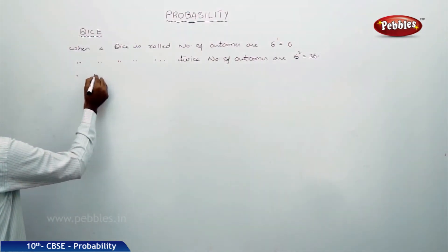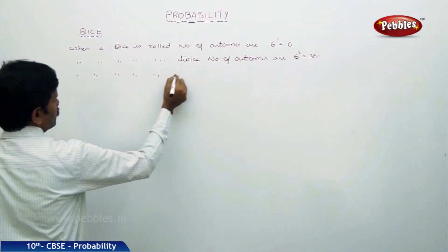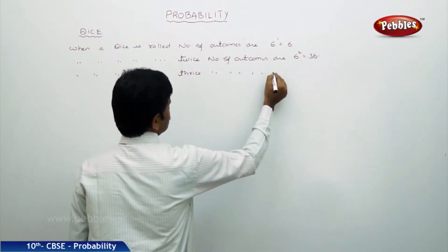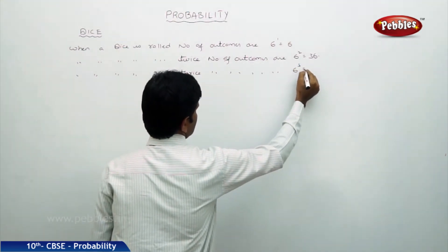Similarly, when a dice is rolled thrice, the number of outcomes are 6 power 3, that is 216.